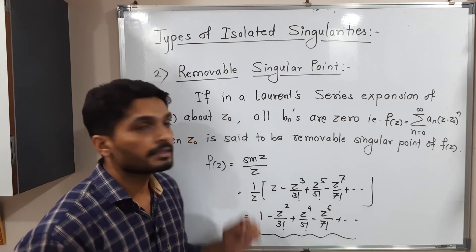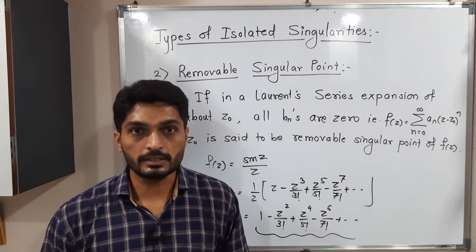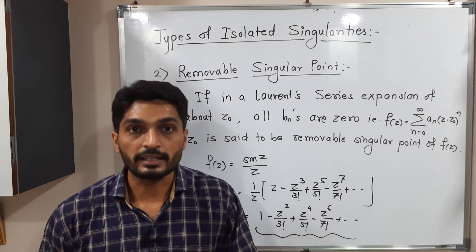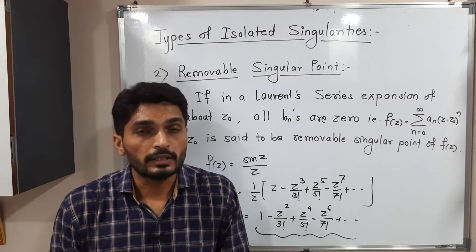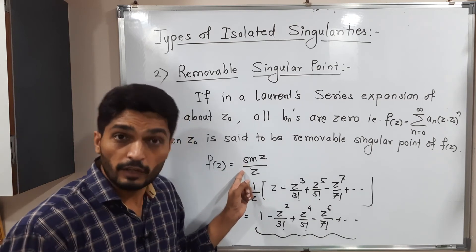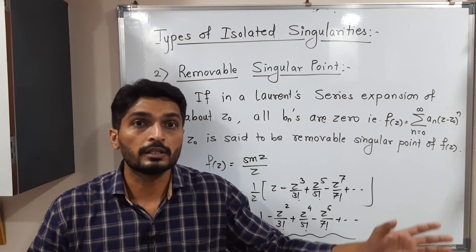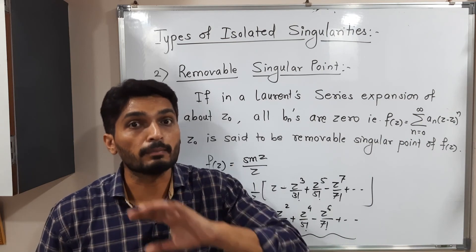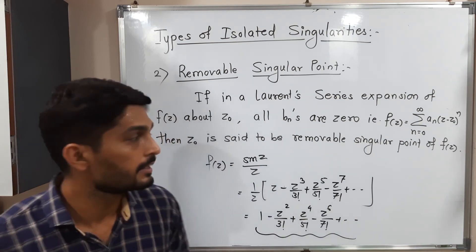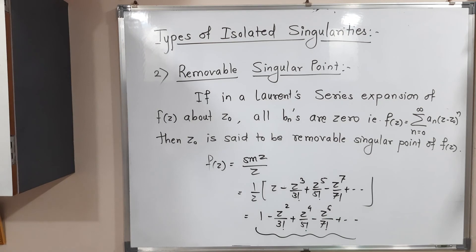Therefore, we say that z = 0 is a removable singularity. That means, if you consider this function, you can easily see z = 0 is a singular point. But if you find the Laurent series expansion, that singularity is removed. That's why we call it a removable singular point.